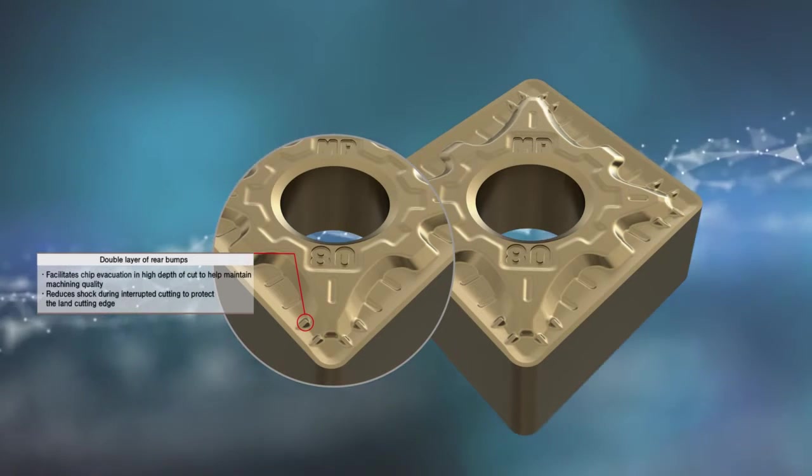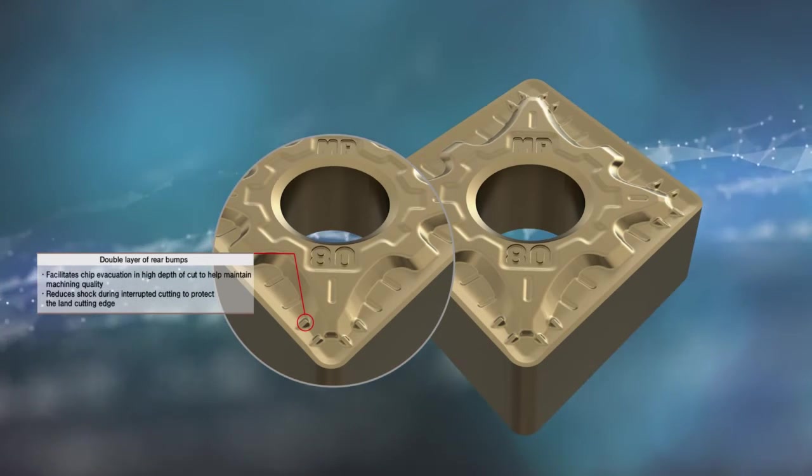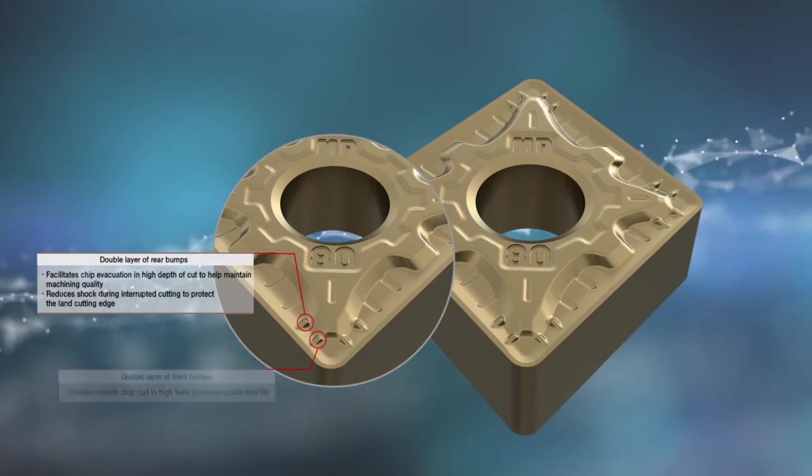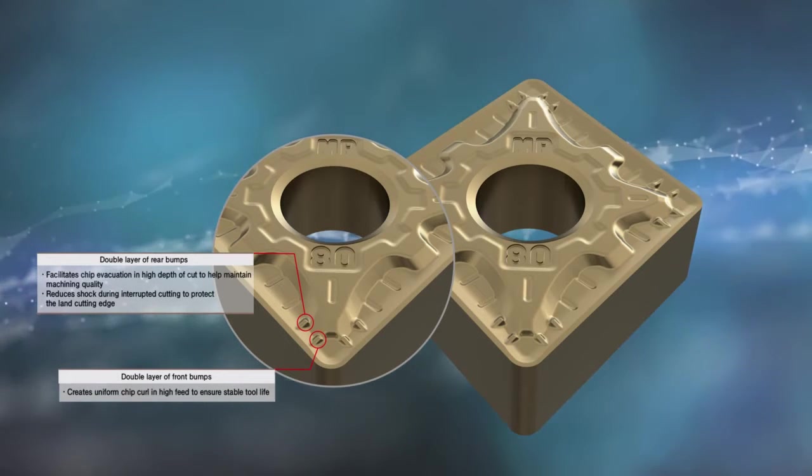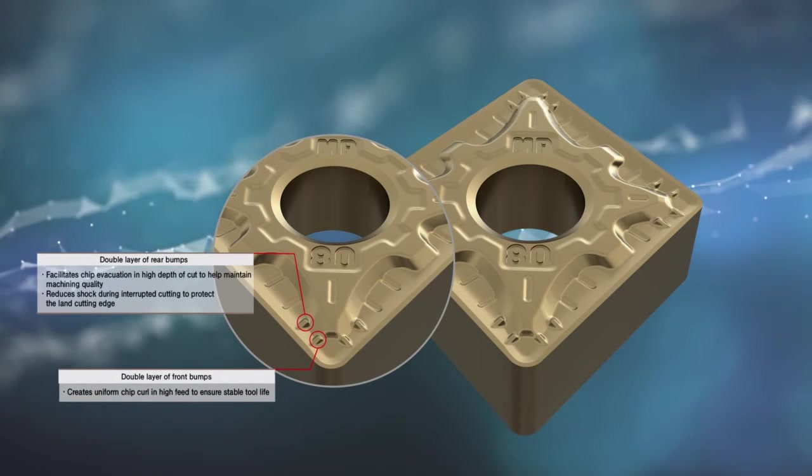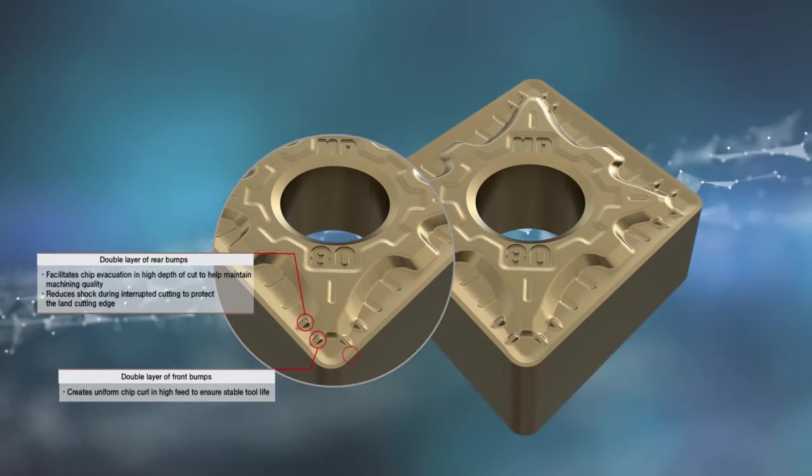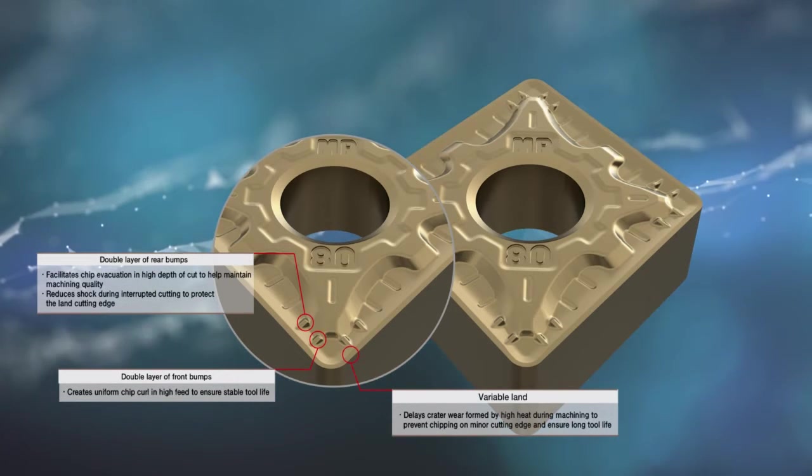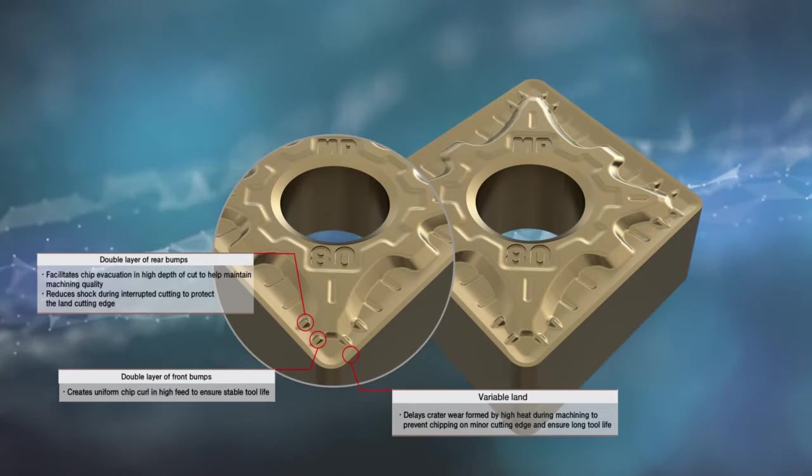Double layers of bumps in the rear side facilitate chip evacuation in high-depth cuts and help maintain machining quality while protecting the land cutting edge by reducing shock in interrupted cutting. Double layers of bumps in the front side help create a uniform chip curl to ensure longer tool life.